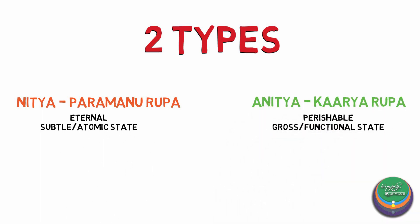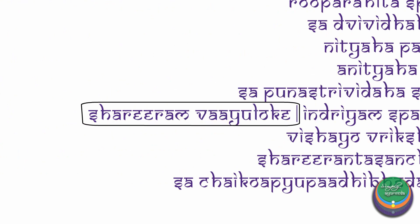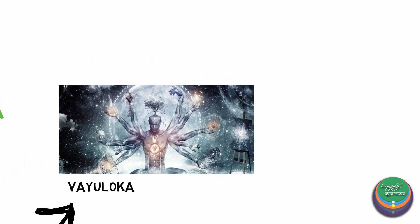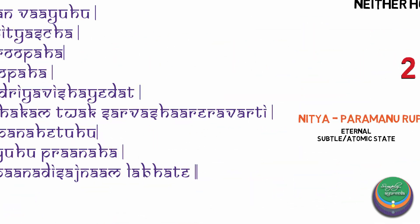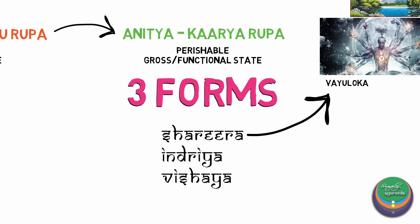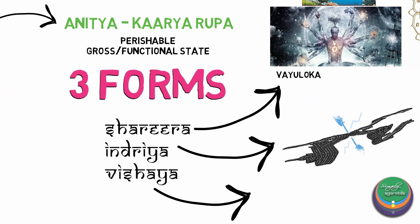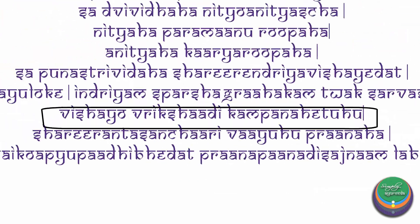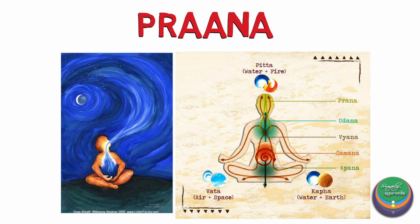It is a product of Paramanu Rupa. This Karya Rupa exists in three forms. The Shadira form is Vayu Loka — it includes the invisible world which is born out of Vayu, but a manifestation of this is what we observe in the physical world. The Indriya form is the skin which spreads all over the body and perceives touch. The Vishaya or object form includes all the objects around us which are affected by Vayu, for example the movement of trees due to wind. This Vayu moving inside the body is called Prana. It is a single entity, but based on its functions and locations it is called by different names such as Prana, Apana, etc.